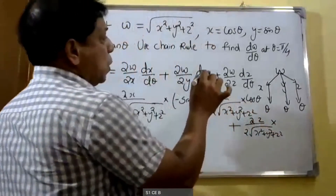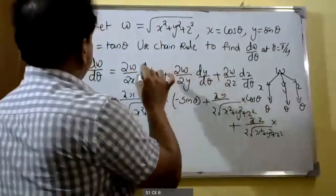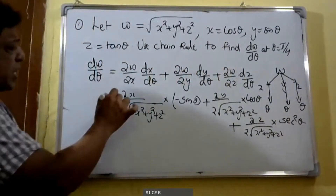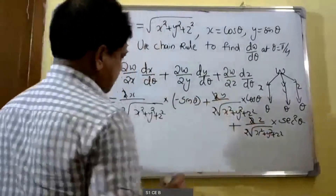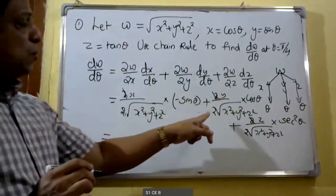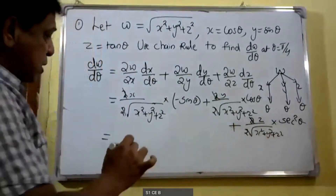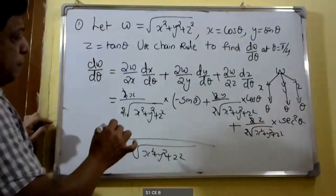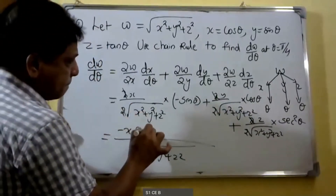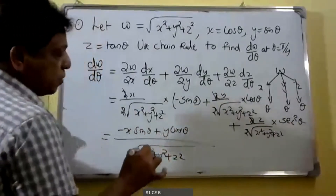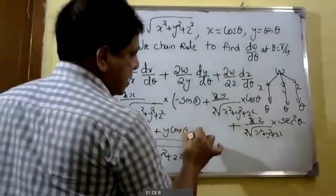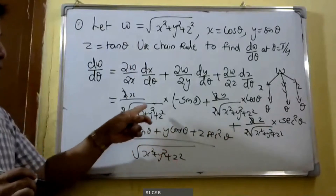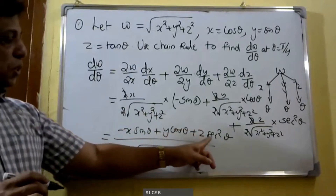For dz/dθ, since z = tan θ, we get dz/dθ = sec²θ. We cancel the 2s, and taking the common denominator √(x² + y² + z²), the numerator becomes −x·sin θ + y·cos θ + z·sec²θ. So dw/dθ = (−x·sin θ + y·cos θ + z·sec²θ) / √(x² + y² + z²).